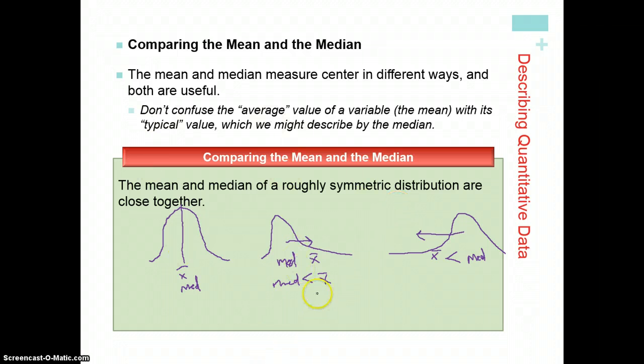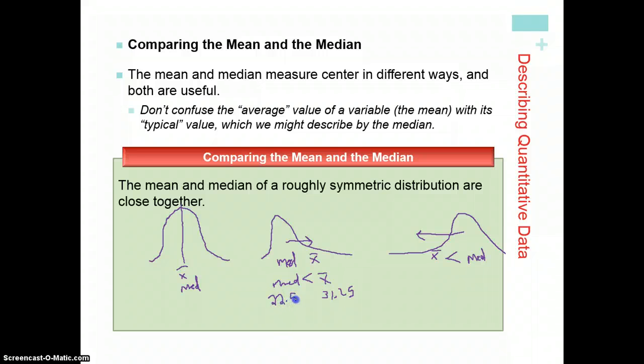The example that we used in the previous slide was a skewed right distribution, and our mean was 31.25 minutes, and our median was 22.5, and that satisfies this inequality, that 22.5 is less than 31.25. So that just shows us a numerical representation of how this data is skewed right, along with our visual representation.